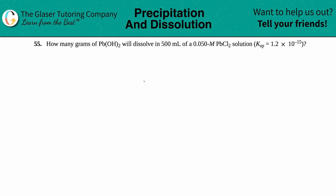Number 55: how many grams of lead hydroxide, Pb(OH)₂, will dissolve in 500 milliliters of a 0.050 molar PbCl₂ solution? They give us the Ksp of 1.2 times 10 to the negative 15th.